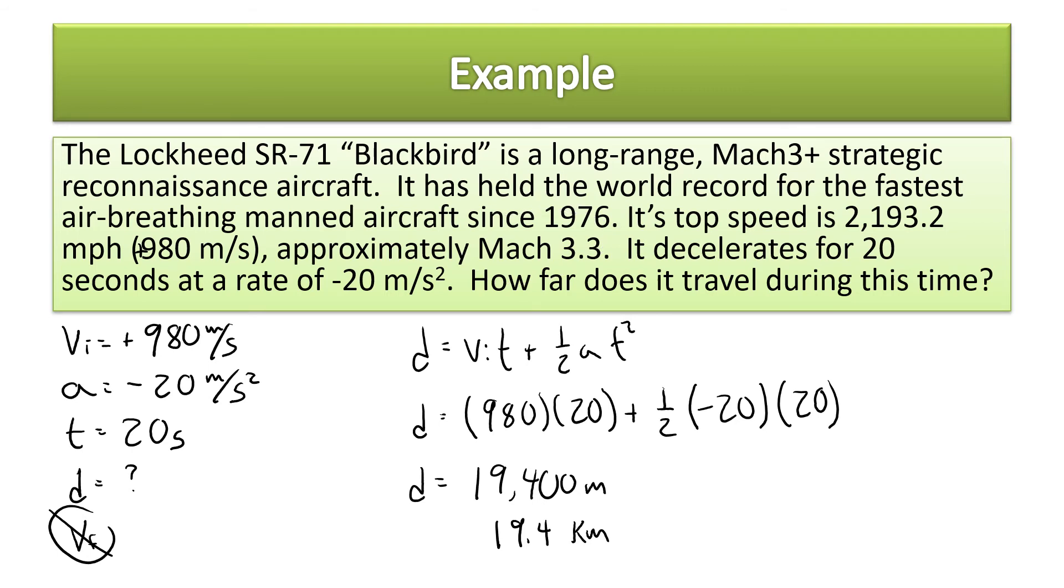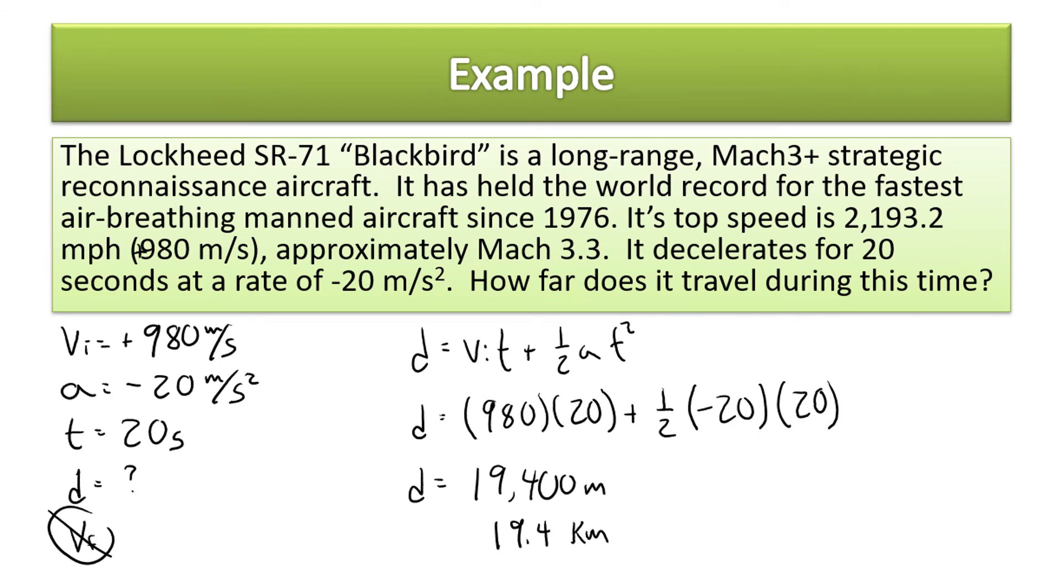Actually I made a mistake here. Did you catch it? I forgot to square the time. Oh man, so this will make this a little bit less—still a pretty far distance for only 20 seconds. You end up getting 1,920 meters, and that turns into only 1.92 kilometers, which is a far distance for 20 seconds. Can you run 1.92 kilometers in 20 seconds? I don't think so.